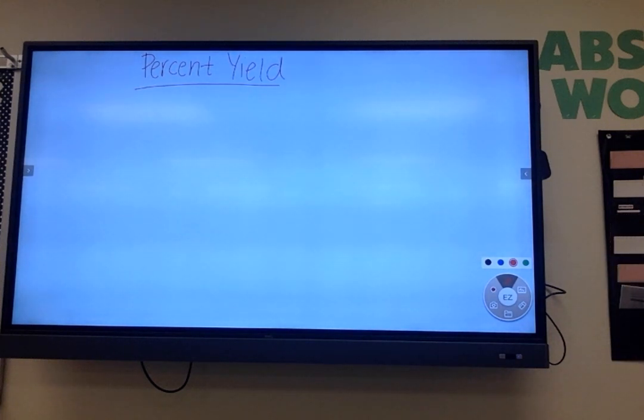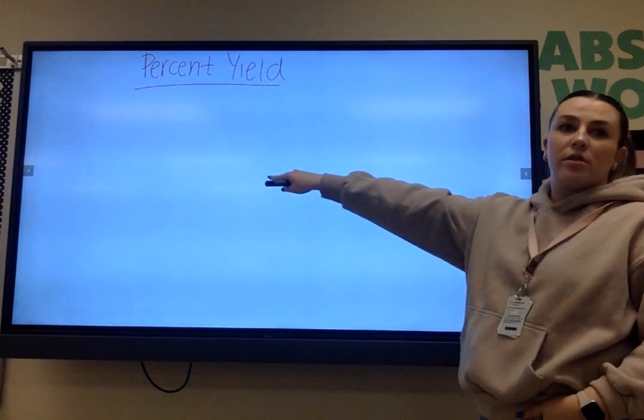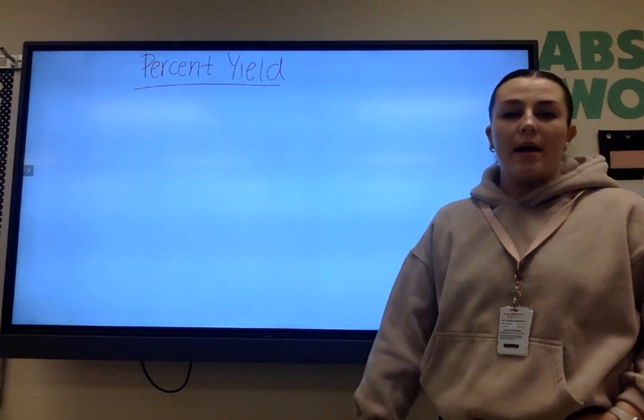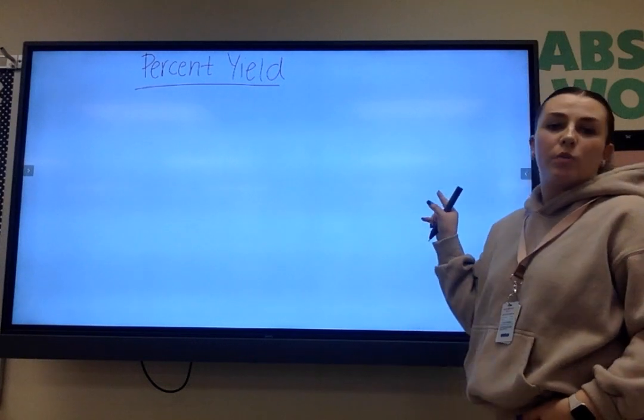Okay, so this is the last thing that we have to learn before our test, all right? And it's similar to limiting reactants in the sense that we are still using gram-to-grams. So I still have those train tracks set up on my board. We are incorporating that in order to solve for percent yield as well.